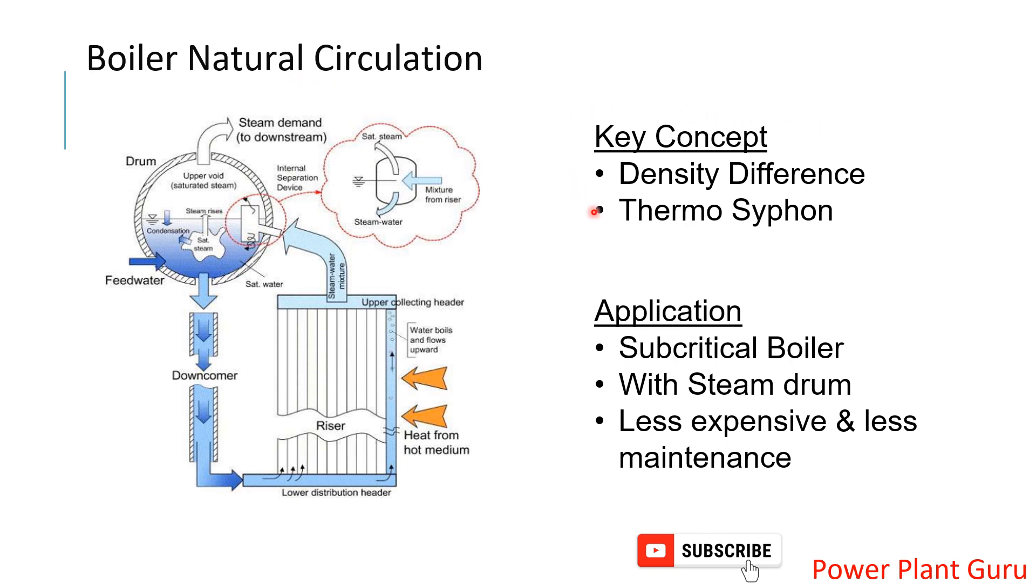In the next video we will discuss forced circulation. Here I have mentioned the key concepts and applications. Natural circulation is used in subcritical boilers with steam drums.